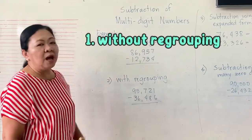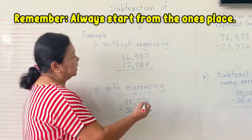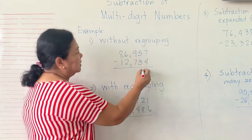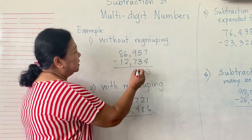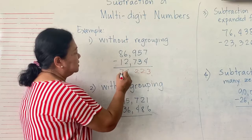Number one, without regrouping. So you will always start from the one's place. 7 minus 4 is 3, 5 minus 3 is 2, 9 minus 7 is 2, 6 minus 2 is 4, 8 minus 1 is 7.